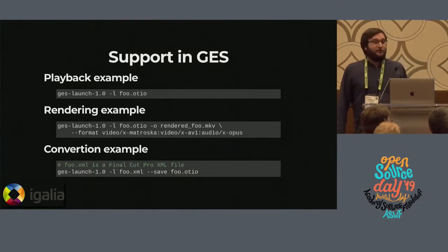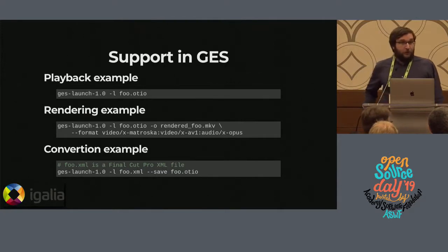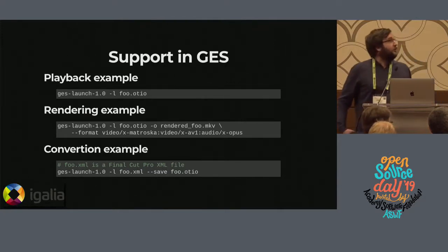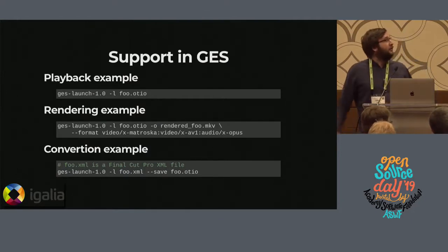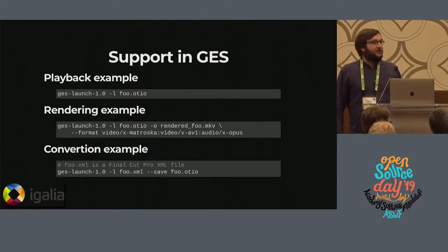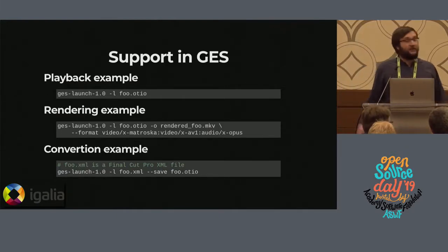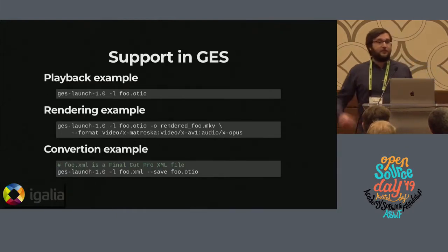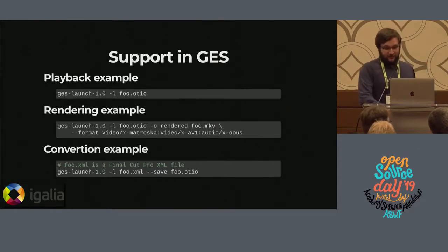We can also use gst-launch as a conversion tool. Here we just launch foo.xml — which in that case would be a Final Cut Pro XML file — and save it to disk. It's very similar to auto-converting, but we can use gst-launch because that's a feature we already had, and it's all natively supported in GStreamer, so we can take advantage of that.